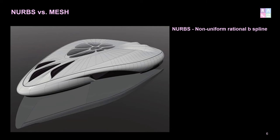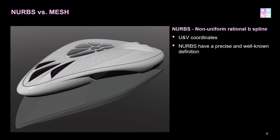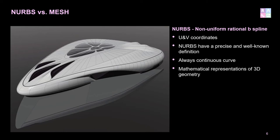Looking at a NURBS-based system: NURBS stands for Non-Uniform Rational B-Spline and it runs off a UV coordinate system. XYZ coordinates place points within a fixed plane of space, whereas U and V are coordinates relative to the surface, no matter the shape of that surface. NURBS has a precise and well-known definition of a point on a surface in space, and the curve is always continuous — no matter how close you zoom in to a NURBS curve, it will never appear faceted. It will always be perfectly curved. The mathematical definition is continuous and infinite in precision, much like the real world.